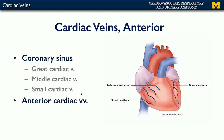Here is an anterior view of the heart. We can see the great cardiac vein ascending along with the anterior interventricular branch. That great cardiac vein is going to wrap around through the coronary sulcus and feed into the coronary sinus. We can also see the small cardiac vein in association with the right marginal branch, riding along the inferior margin of the heart and then finding the coronary sulcus and feeding into the coronary sinus.